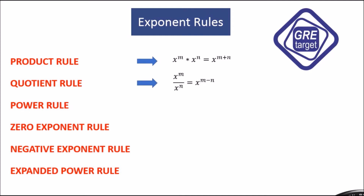The second rule is the quotient rule: x raised to m divided by x raised to n. We subtract the exponents, so the answer is x raised to m minus n.